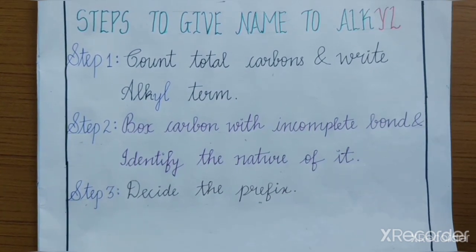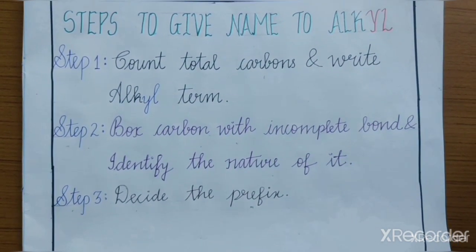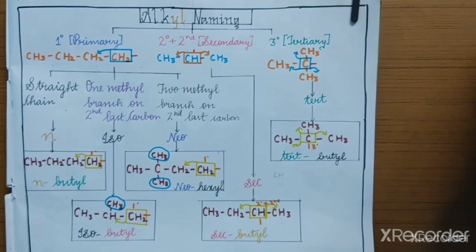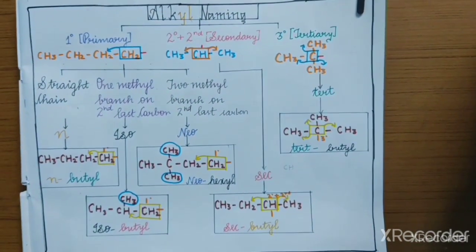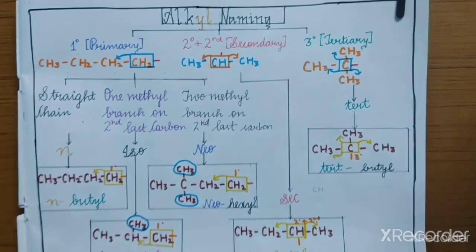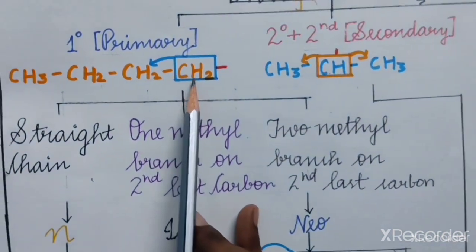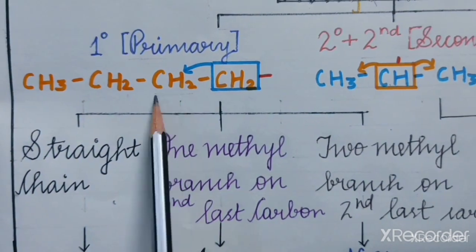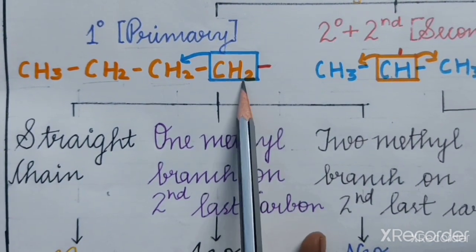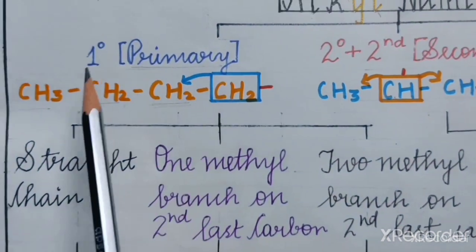I know you all must be thinking about the nature and the prefix — don't worry, we will learn this in detail. Now we will learn how to identify the nature of alkyl and what prefixes can be used in alkyl naming. Here in this chain, this is the carbon with the incomplete bond.